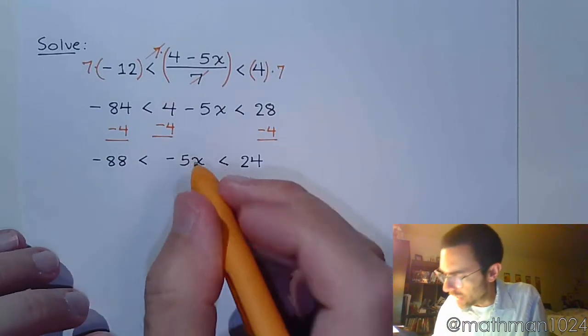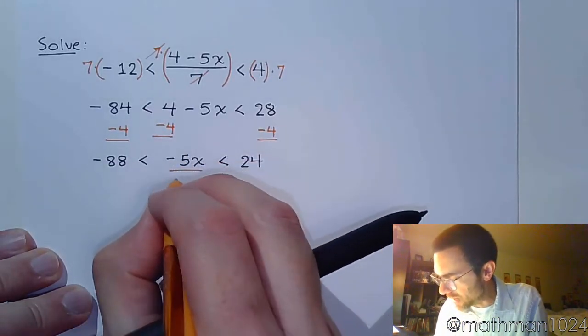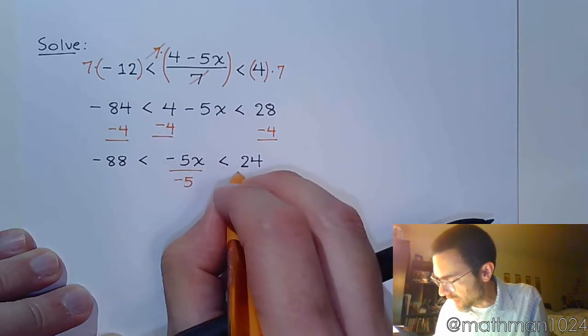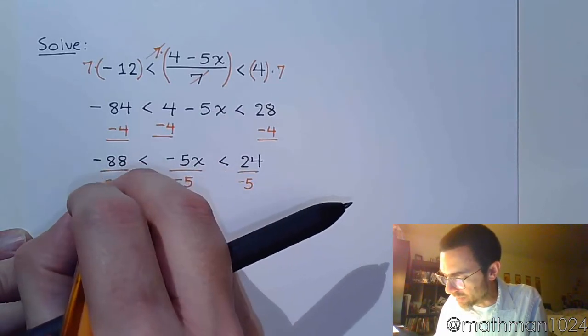The last step, though, is to get rid of this coefficient of negative 5. So, we divide all three parts of the inequality by negative 5.